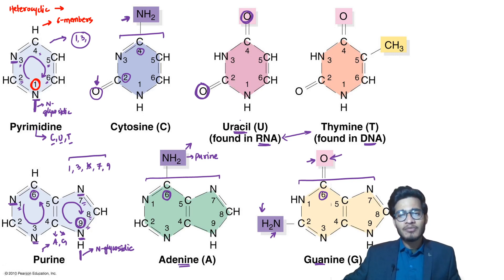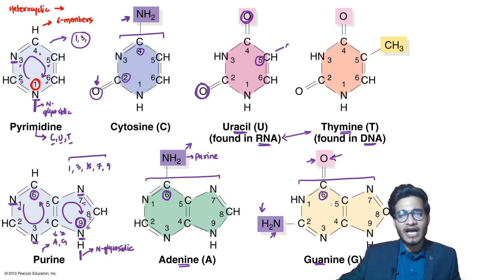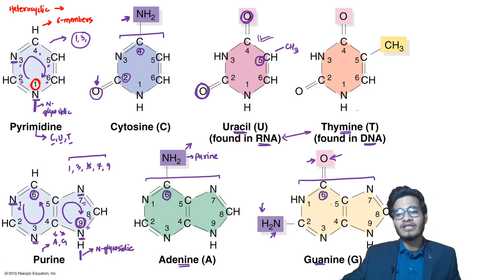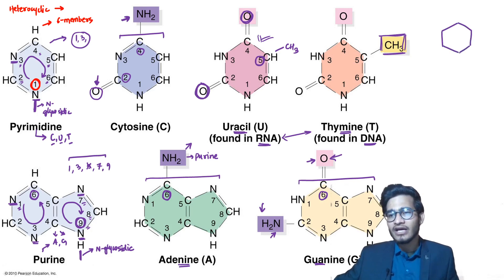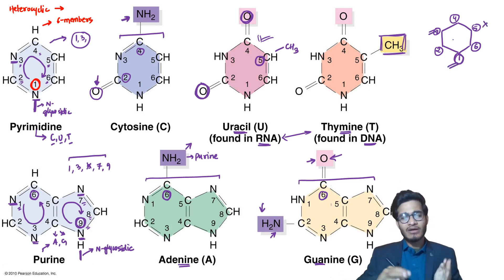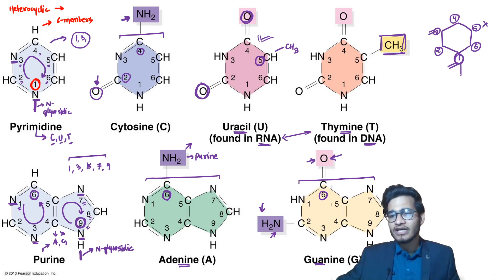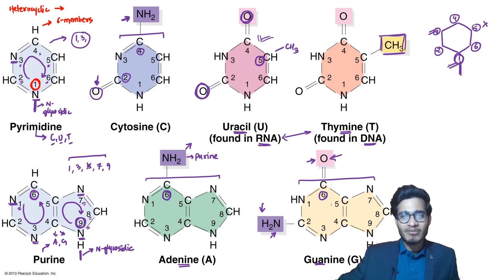As the NCERT states, thymine is nothing but 5-methyl uracil. This means if you add a methyl group at the 5th position of uracil, it becomes thymine. The only difference between uracil and thymine is this methyl group at position 5. So you simply add substituents onto the numbered backbone structure. For the six-membered pyrimidine ring: start from the bottom with position 1, count clockwise — 1, 2, 3, 4, 5, 6 — nitrogen is present at positions 1 and 3.